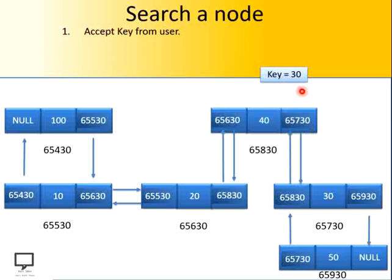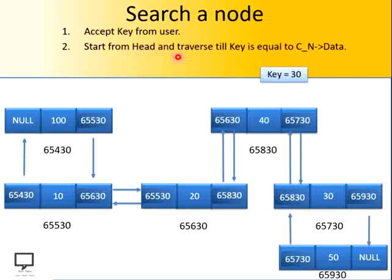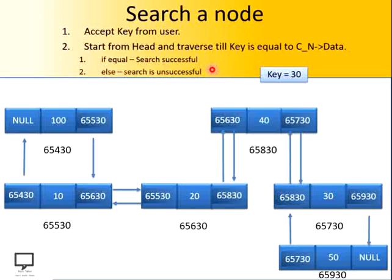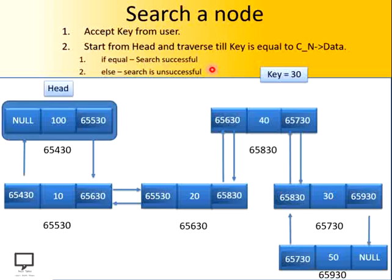After accepting a key, we have to start from the head and traverse until the key is equal to the data part of the current node. Every time we will move in the forward direction to search the key value in the doubly linked list. So ultimately we will use the logic of traversal. While traversing, we will compare the key value with the data part of every current node. If the data part of a node is equal to the key value, then the search is successful; otherwise, the search is unsuccessful.